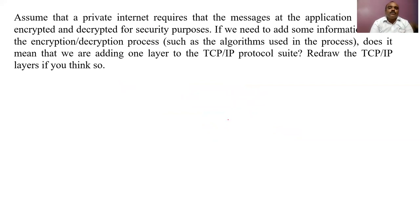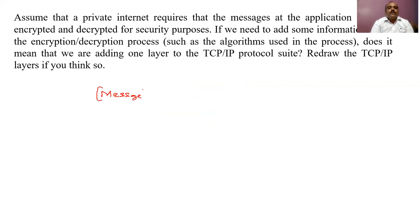Let's take another example. Assume that a private internet requires the message at the application layer to be encrypted and decrypted. A message needs to be encrypted — converted to ciphertext — and also decrypted. Encryption transforms a readable message into something unreadable, called ciphertext.